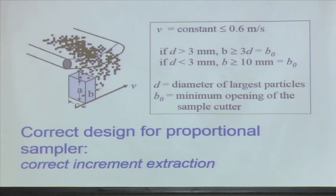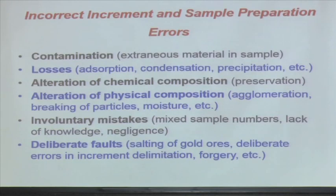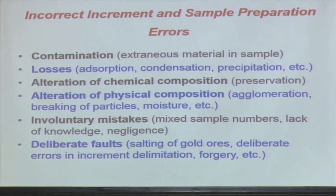The correct design of a proportional sampler is basically about correct increment extraction — how you are actually extracting the material, and how long you will be doing it depends on requirements and frequency. Now regarding increment and sample preparation errors, there are 2 other error types. One error I discussed comes from improper design of the sampling device. Increment and sample preparation errors can also come from contamination — which can be avoided easily.